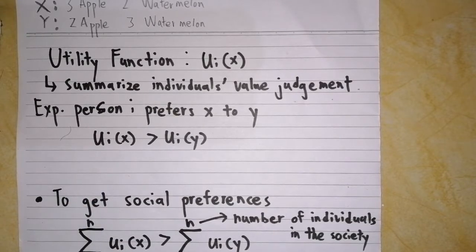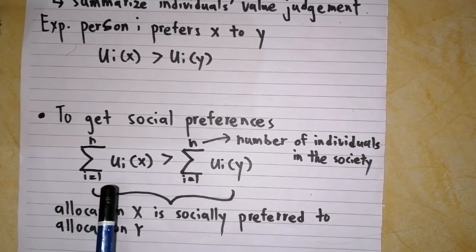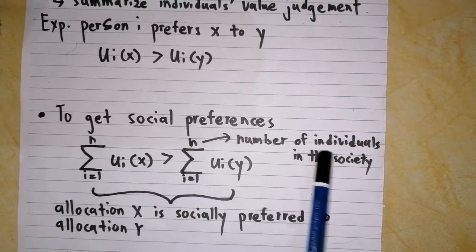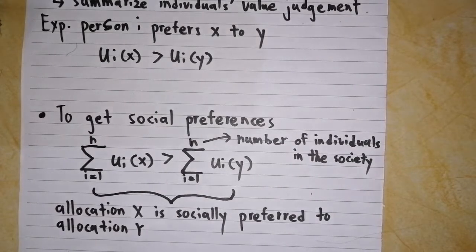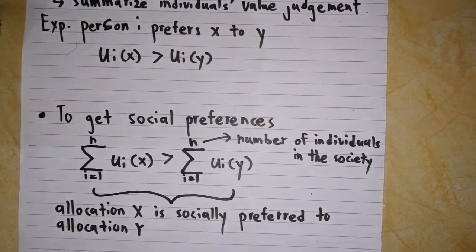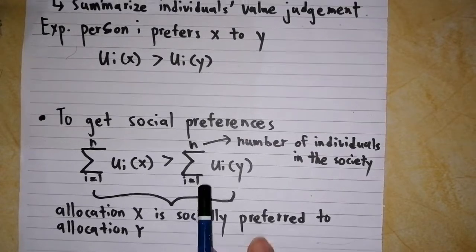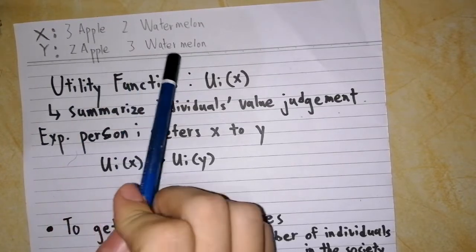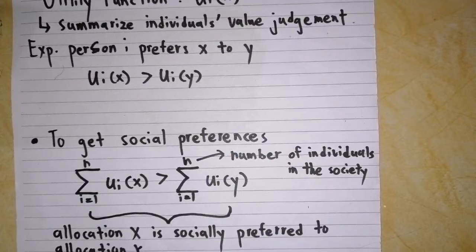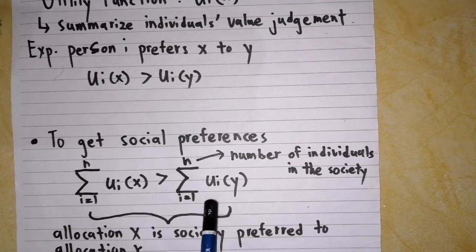To get a social preference, we add a sigma ahead of the utility functions. N refers to the number of individuals in the society. So we basically sum all the utility functions of one allocation for each individual in the society. In this case, allocation X is socially preferred to allocation Y, meaning allocation X with three apples and two watermelons is socially preferred, since the sum of utility function X is greater than the sum of utility function Y.